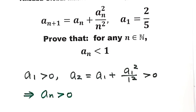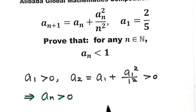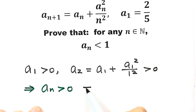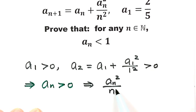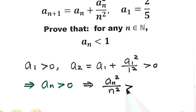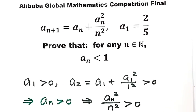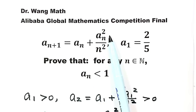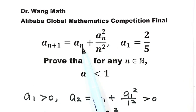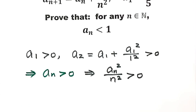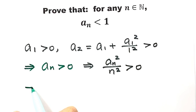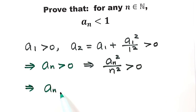Now let's look at this term: aₙ squared over n squared. Because aₙ is bigger than 0, so this whole thing is also bigger than 0. Now looking at the equation, because this part is bigger than 0, so then aₙ is less than aₙ₊₁. So we have aₙ < aₙ₊₁.